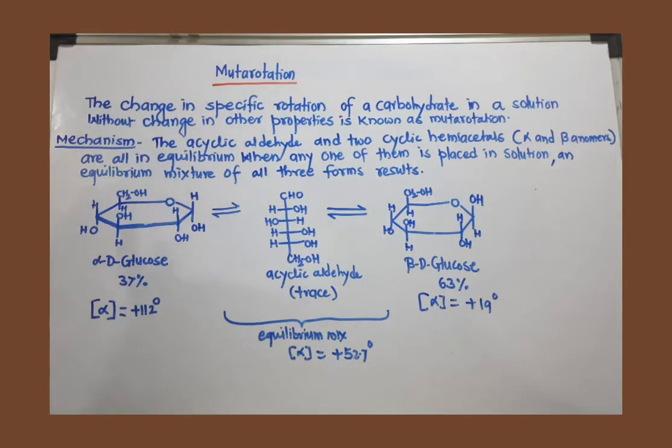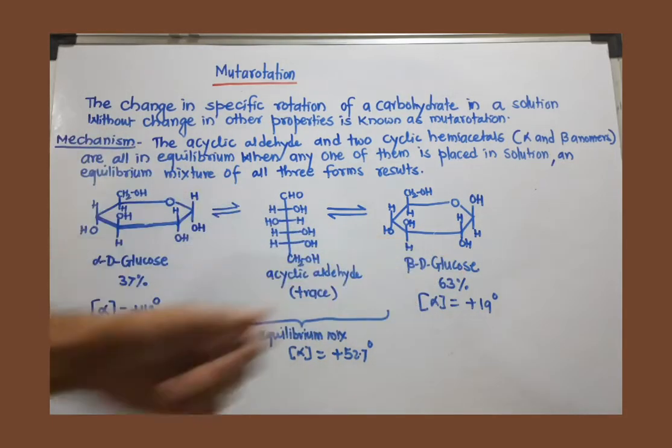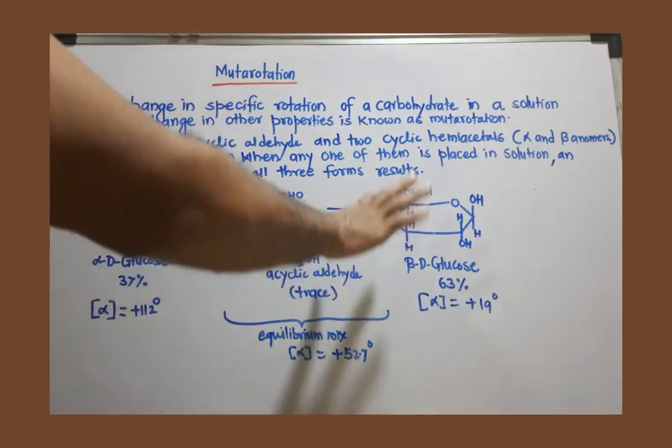Now, if we crystallize glucose by applying different conditions and different solvents, we can separate these two anomers: alpha-D-glucose and beta-D-glucose.